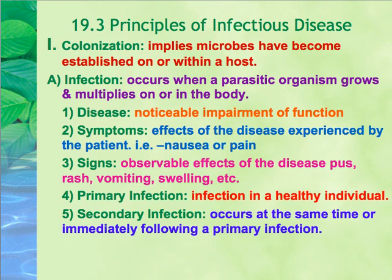There are some basic principles of infectious disease. In order for a microbe to infect a host, there has to be a first step called colonization — where the microbes become established on or in a host. That can lead to infection, where the parasitic organism grows or multiplies on or in the body. If you think about a population growth curve, you'll see exponential growth — that's infection.